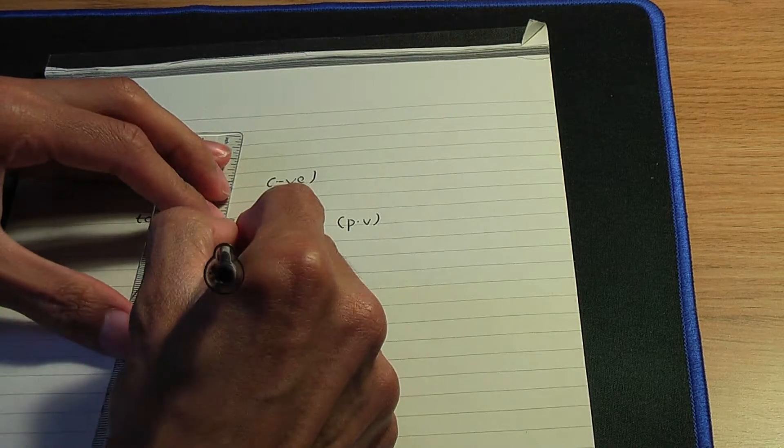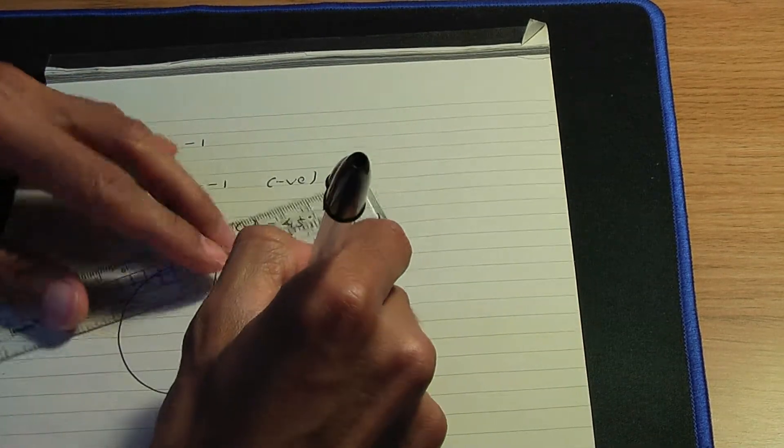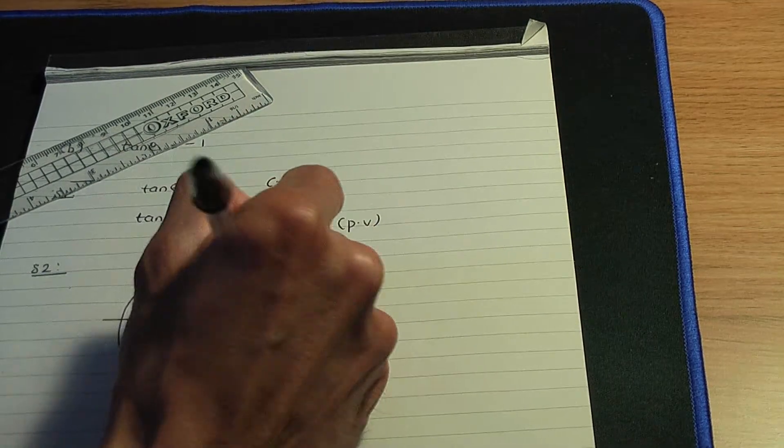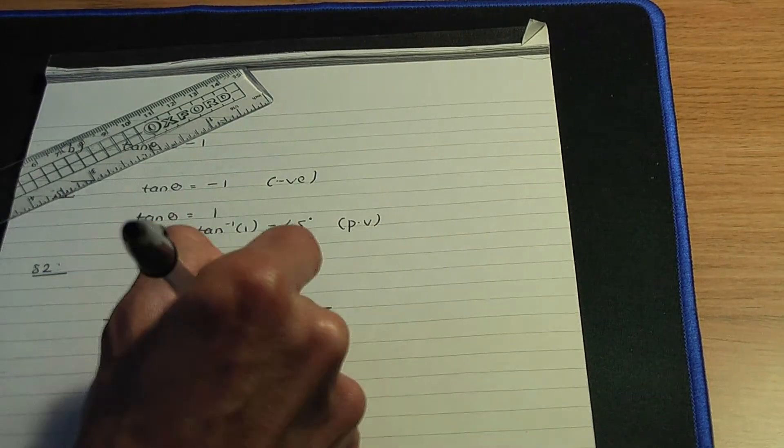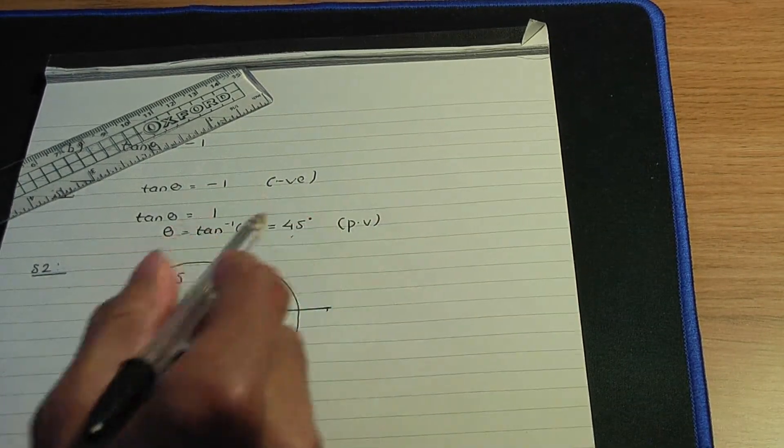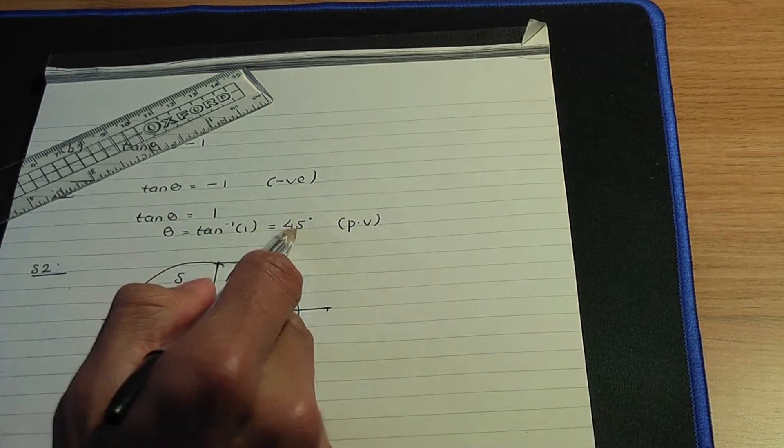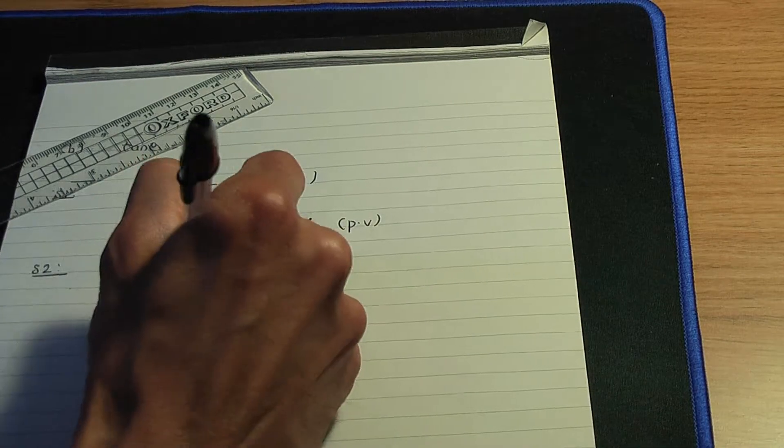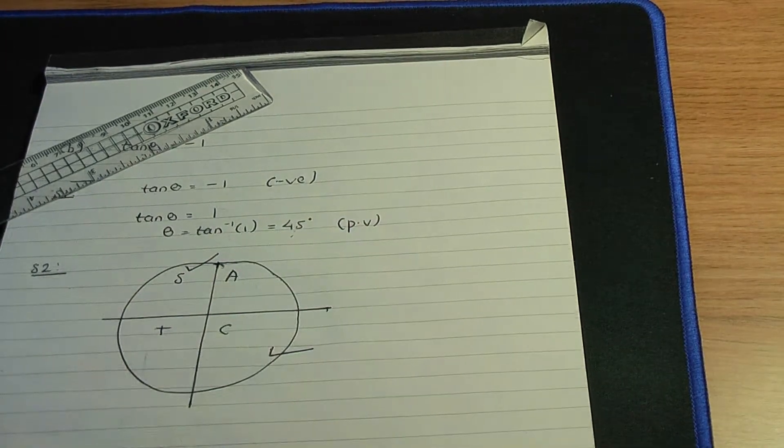Let's include quadrants. Let's label the quadrants ASTC. So 45 degrees where tan is negative. Tan is negative here and here.